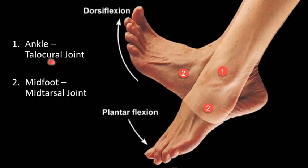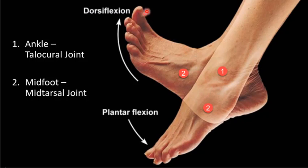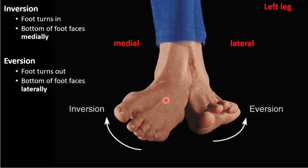Here's the ankle joint, the talocrural joint. That's the relationship between the tib, fib, and the talus in the foot, and you have ankle dorsiflexion and plantarflexion. In the mid-tarsal joint, that's where the tarsals are meeting the talus and the calcaneus, and you're also getting dorsiflexion there as well. So you're getting two points where you get toes up or toes down. We have foot inversion and eversion — this is not happening at the talocrural joint. This is happening at the subtalar joint and the mid-tarsal joint.